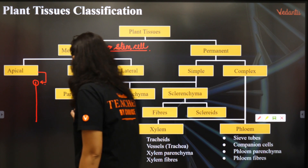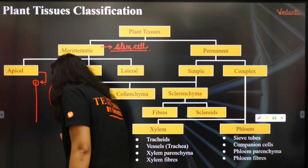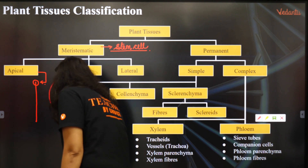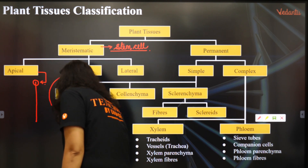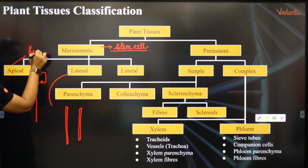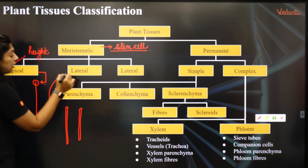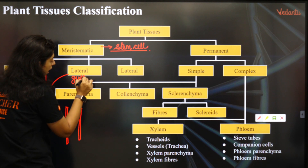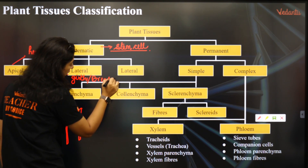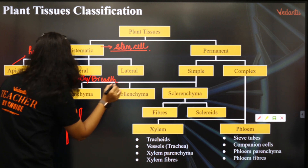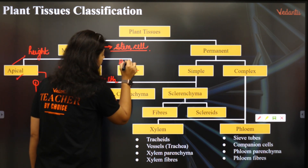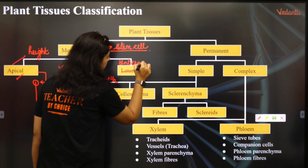The lateral meristem helps in increasing the thickness of the plant because it is present on the sides — this is the girth of the plant. The apical increases the height of the plant, and the lateral increases the girth and breadth of the plant. So this is your apical, lateral, and intercalary meristem.